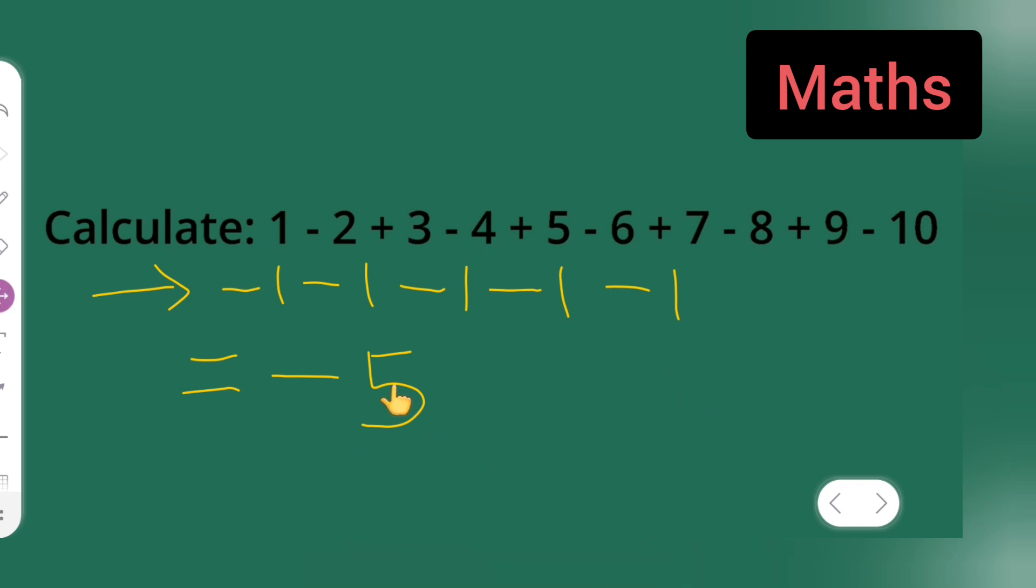So minus 5 is the correct answer. Minus 1, how many? 1, 2, 3, 4, 5. And plus the sign of minus, because you have to add it right.